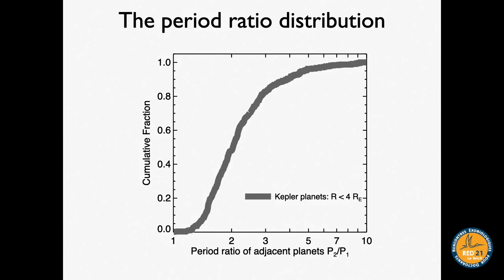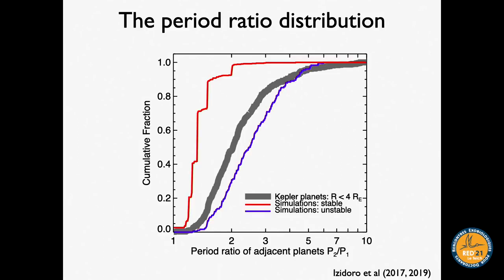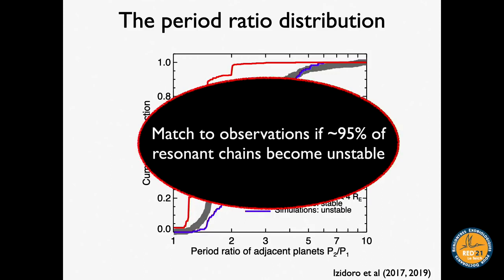As the gas goes away after a few million years, the systems of planets usually go unstable. There's a final phase of collisions: the resonances are destroyed, the systems spread out. This works surprisingly well when you look at the period ratio distribution again. The red curve shows the resonant chain systems that form while gas is present; the blue curve shows what happens after the gas goes away and those chains break.